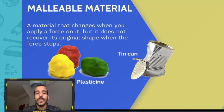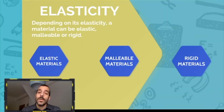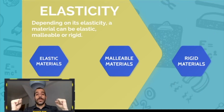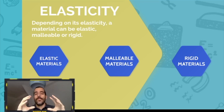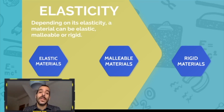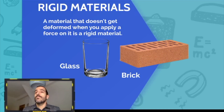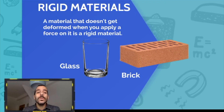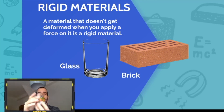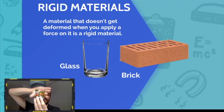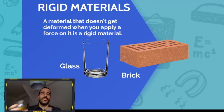So: elastic materials — you apply a force and they turn back to the original form; malleable materials — you apply a force and they deform permanently; and rigid materials are materials that don't deform at all when you apply a force. Examples include a brick or a glass — if I apply force to this glass it doesn't change form.